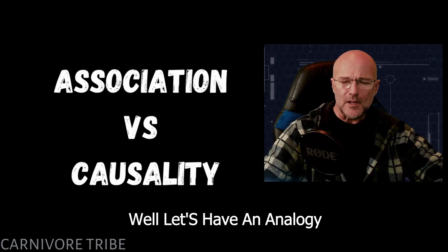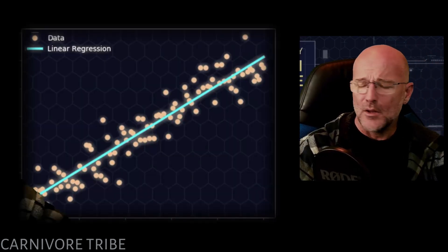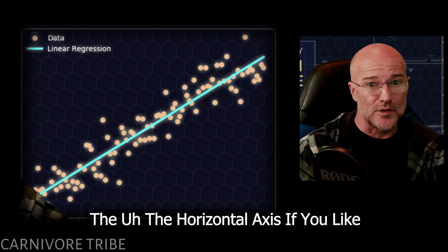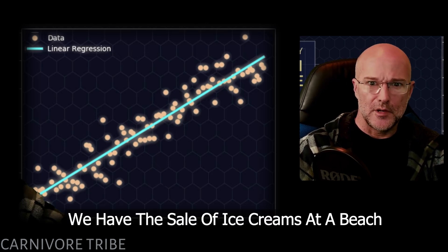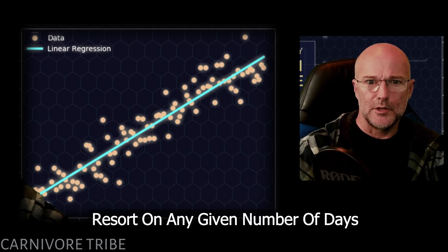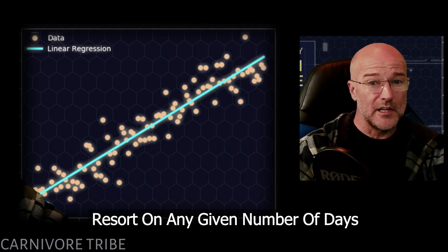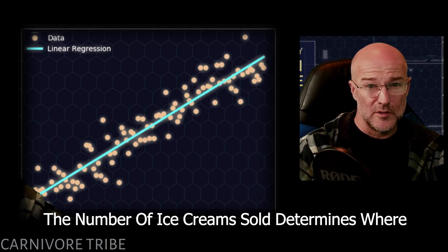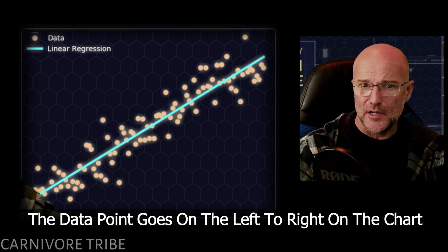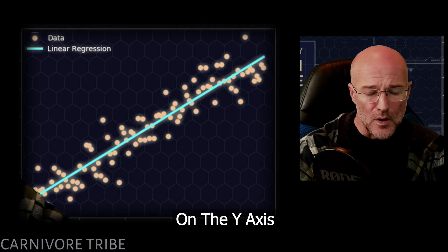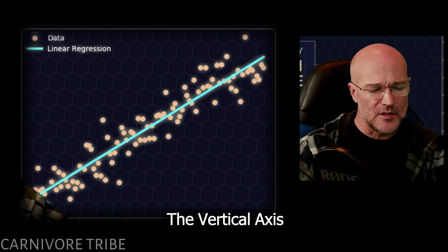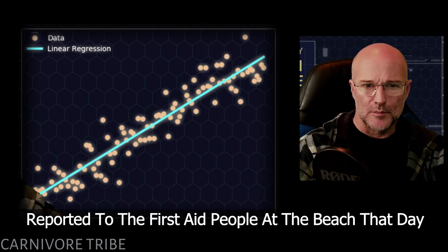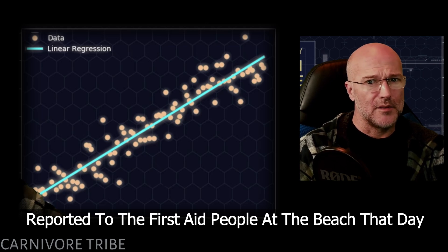Let's have an analogy. Here it is on the screen. On the x-axis — the horizontal axis going left to right — we have the sale of ice creams at a beach resort on any given day where data was collected. The number of ice creams sold determines where the data point falls on the chart. On the y-axis — the vertical axis — we have another outcome variable: the number of cases of sunburn reported to the first aid people at the beach that day.